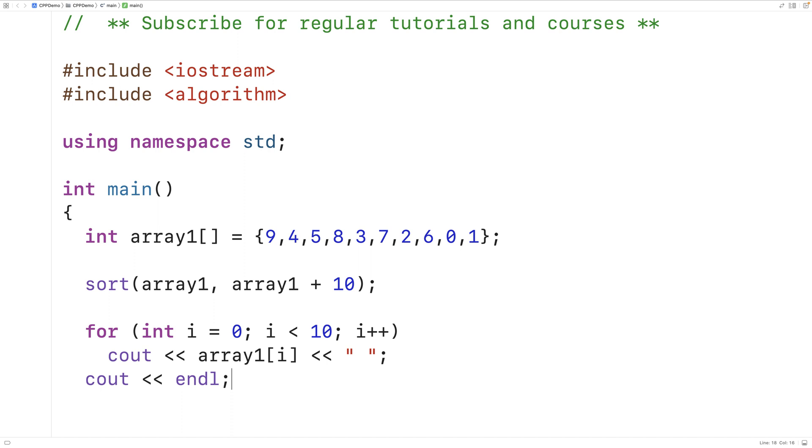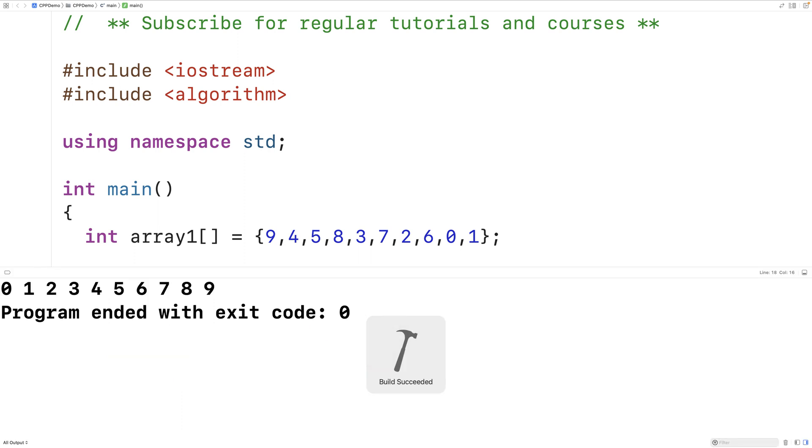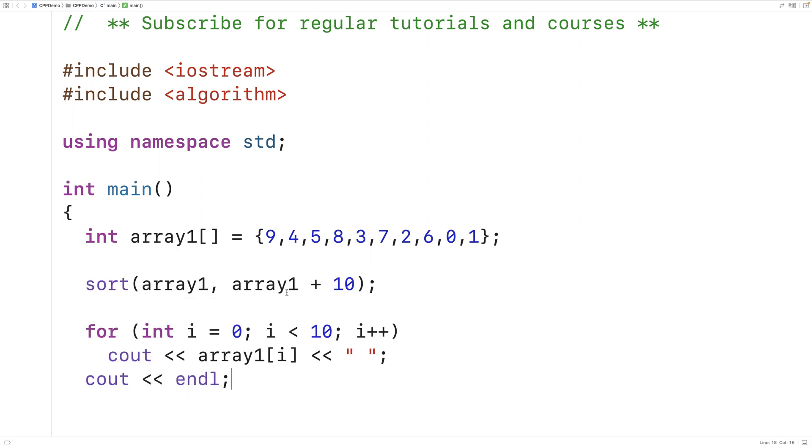So we'll save this and run it. And now we get the array sorted in ascending order here from 0 to 9. So it is working successfully.